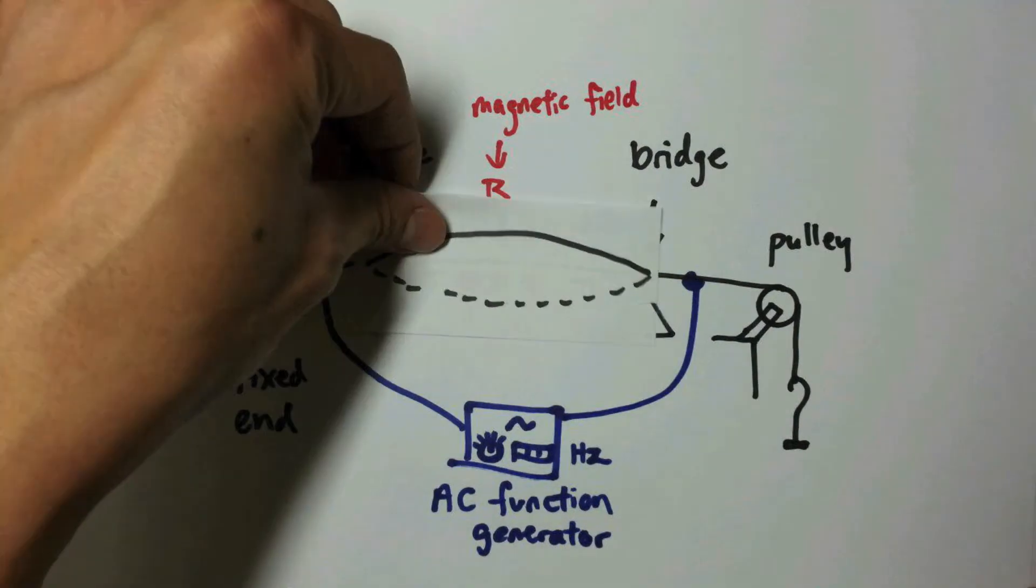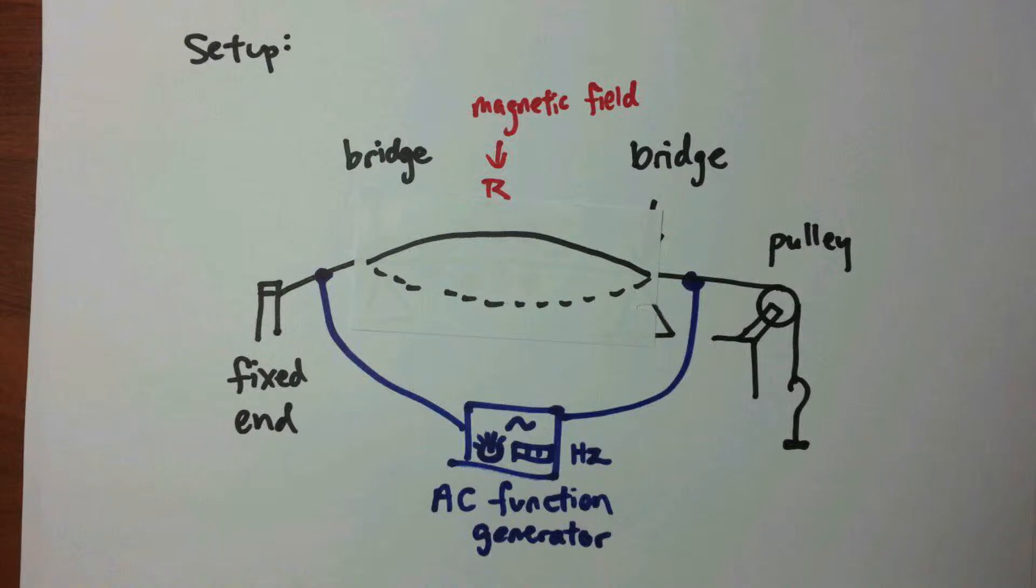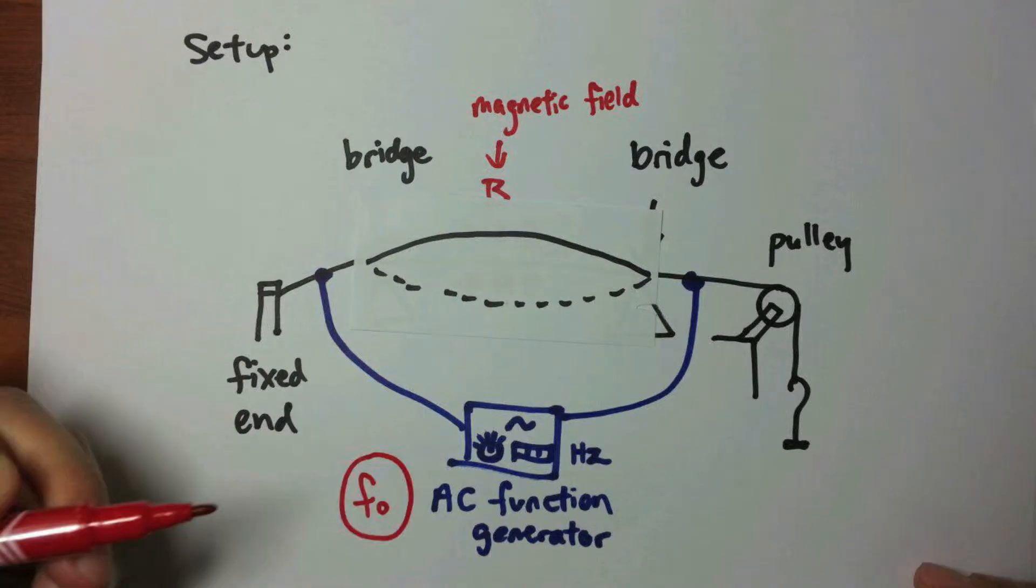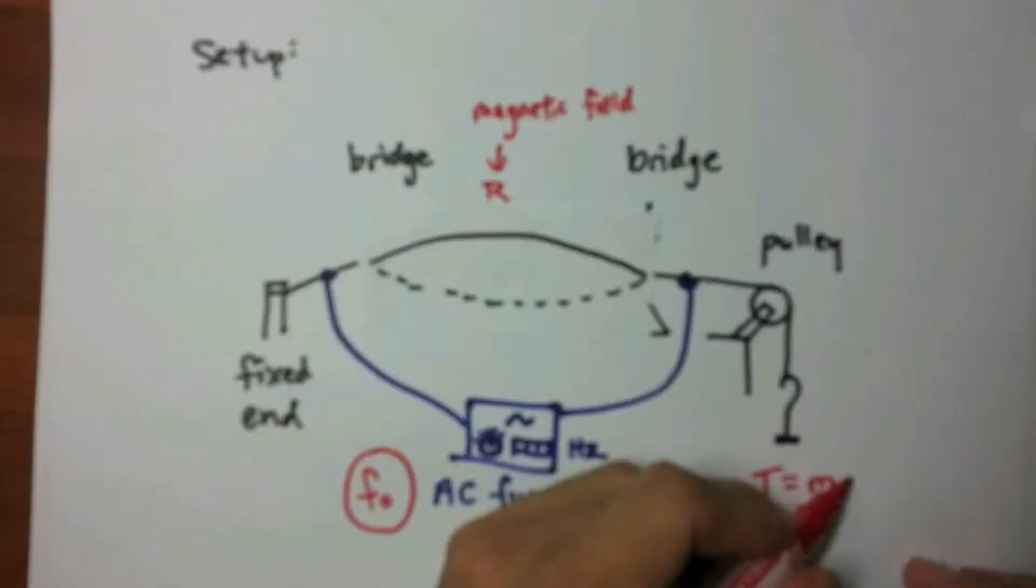By adjusting the frequency of the oscillating current until the fundamental mode of the standing wave is formed on the wire, we can record the resonant frequency F0 for the corresponding tension T.